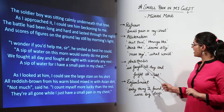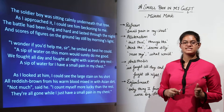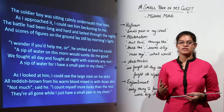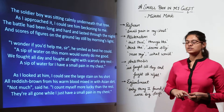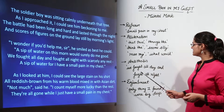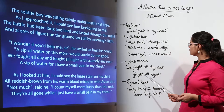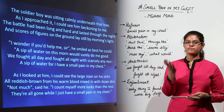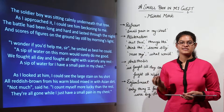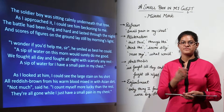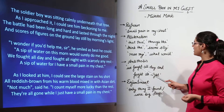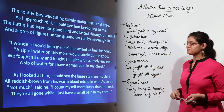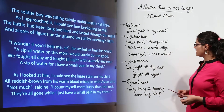Next we have antithesis. This poetic device gives us a sense of now and then, before and after. In the sentence 'we fought all day and fought all night,' we understand the contrast of all day and all night, giving us a sense of opposing ideas. That is why the poetic device antithesis is used here.